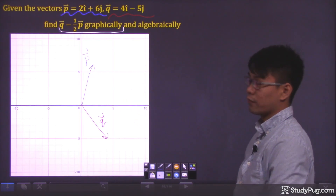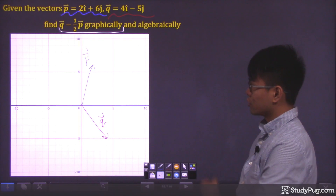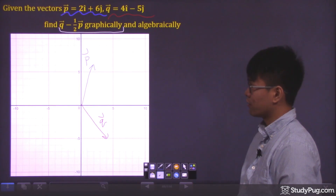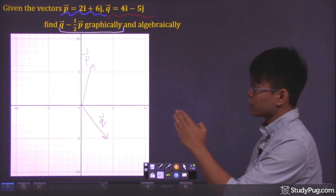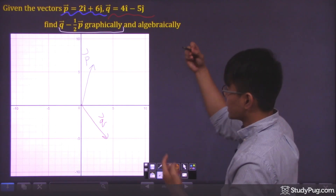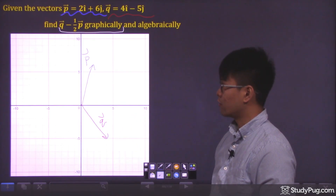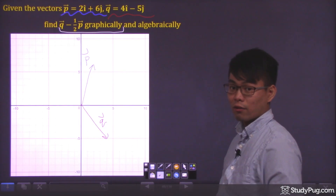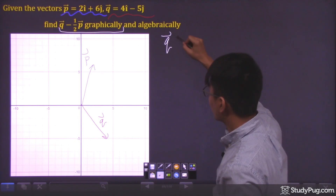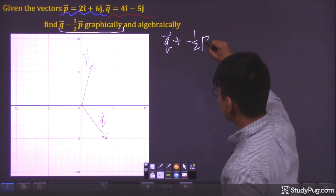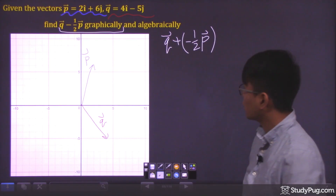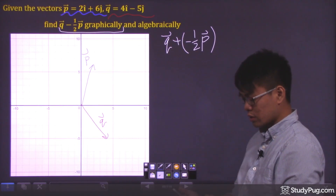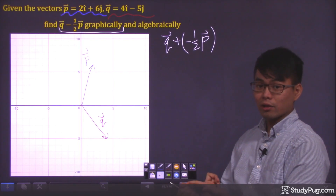We have vector q minus one half of vector p, and we're going to do this graphically. We can't just dive in and subtract the vectors graphically — we need to rewrite the expression. Instead of subtracting, we say we have one vector adding the negative version of the other: vector q plus negative one half of vector p. Now that we have vector addition, we can use either the tip-to-tail method or the parallelogram method.